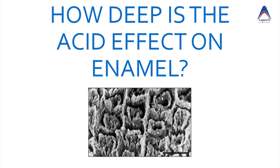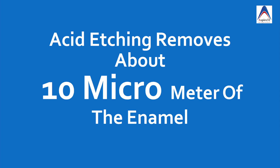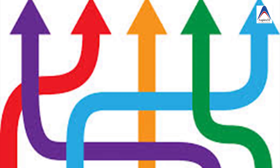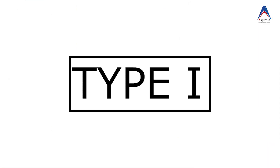Now let's learn the effect of etchant on a microscopic level. When you apply an etchant to the tooth structure it is going to etch around 10 micrometers of enamel, and it can actually produce a microporous layer up to 5 to 50 microns deep into the enamel structure. Depending on how the prisms appear after etching, the pattern is classified into 5 categories.